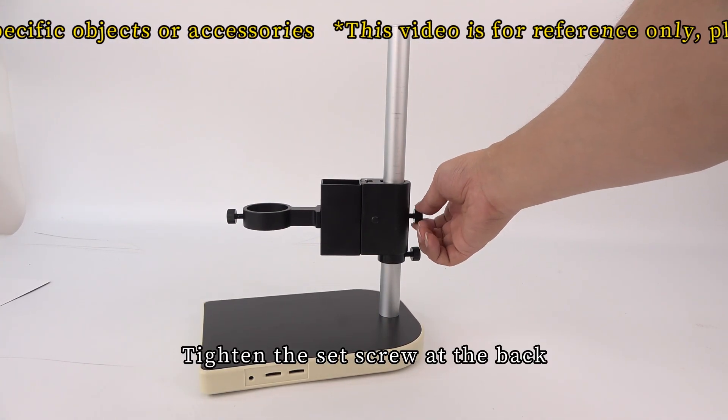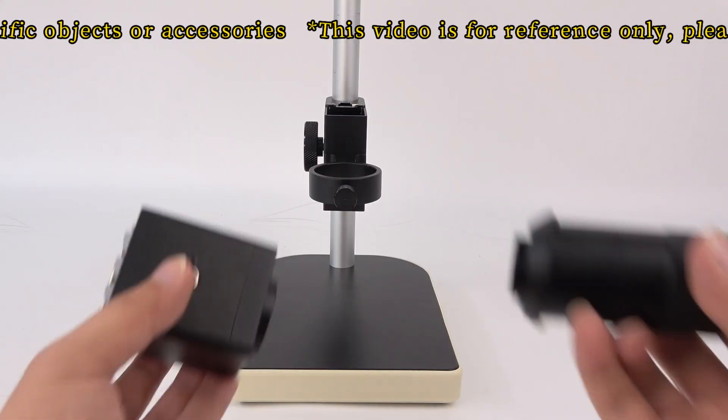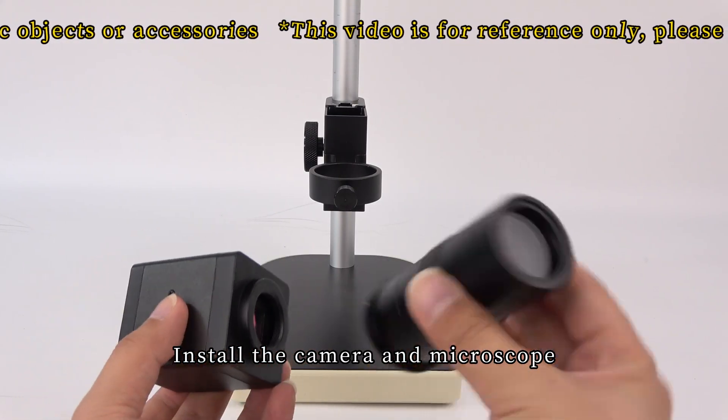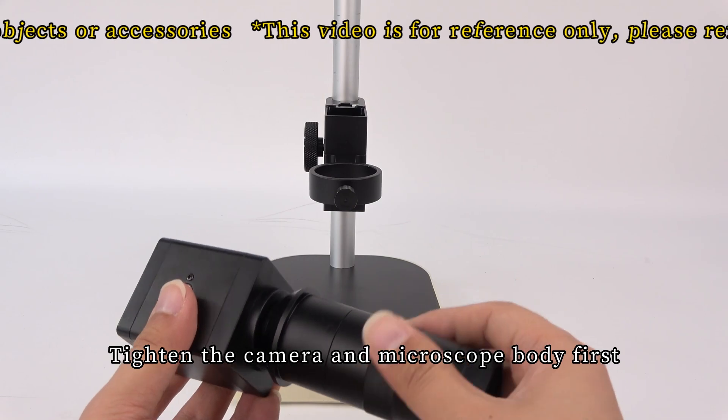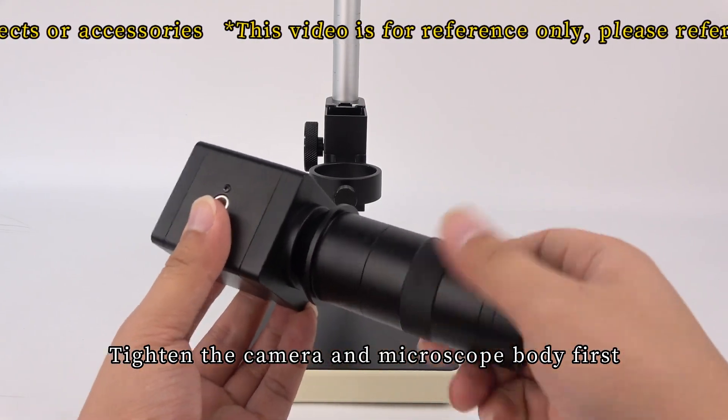Tighten the set screw at the back. Install the camera and microscope. Tighten the camera and microscope body first.